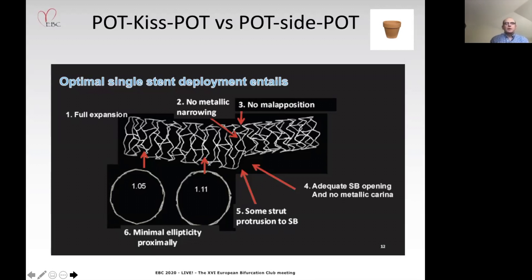When we consider this question of what is the optimal sequence—POT-kiss-POT or POT-side-POT—we have to try and remember what it is we're trying to achieve. This diagram illustrates the important issues we face when trying to deploy a single stent optimally. We need full expansion of the stent with no metallic narrowing and no malapposition, particularly at the carina. Ideally you would have an adequate side branch opening with no metallic carina, but what we are trying to achieve is some side protrusion of the stent into the side branch. Importantly, we also want to achieve minimal ellipticity in the proximal branch, as we believe this gives the best flow dynamics.